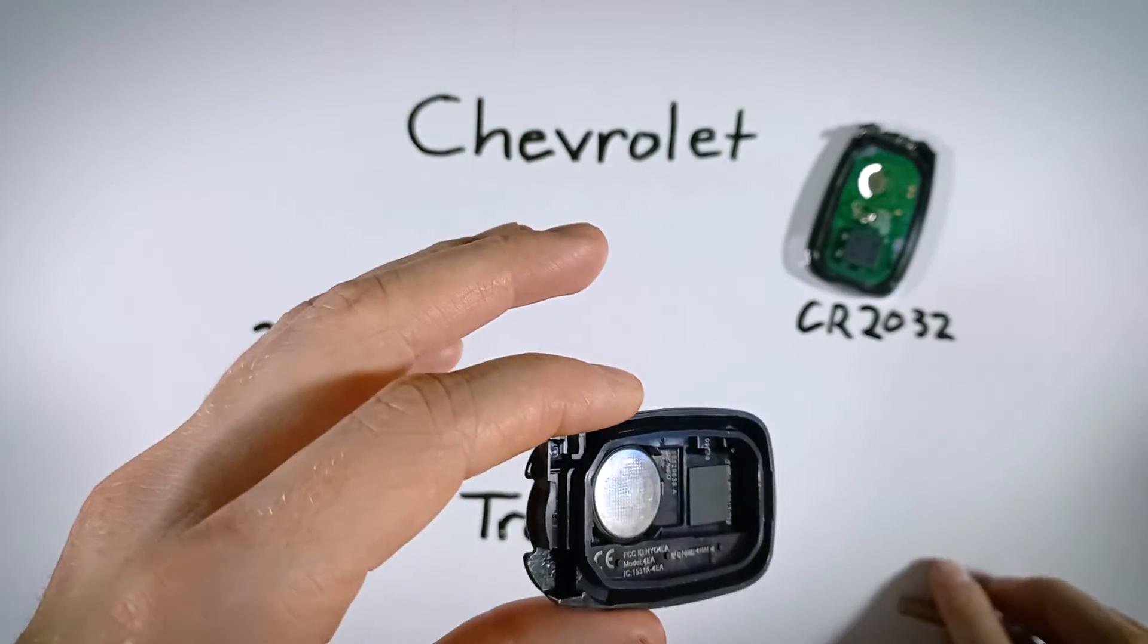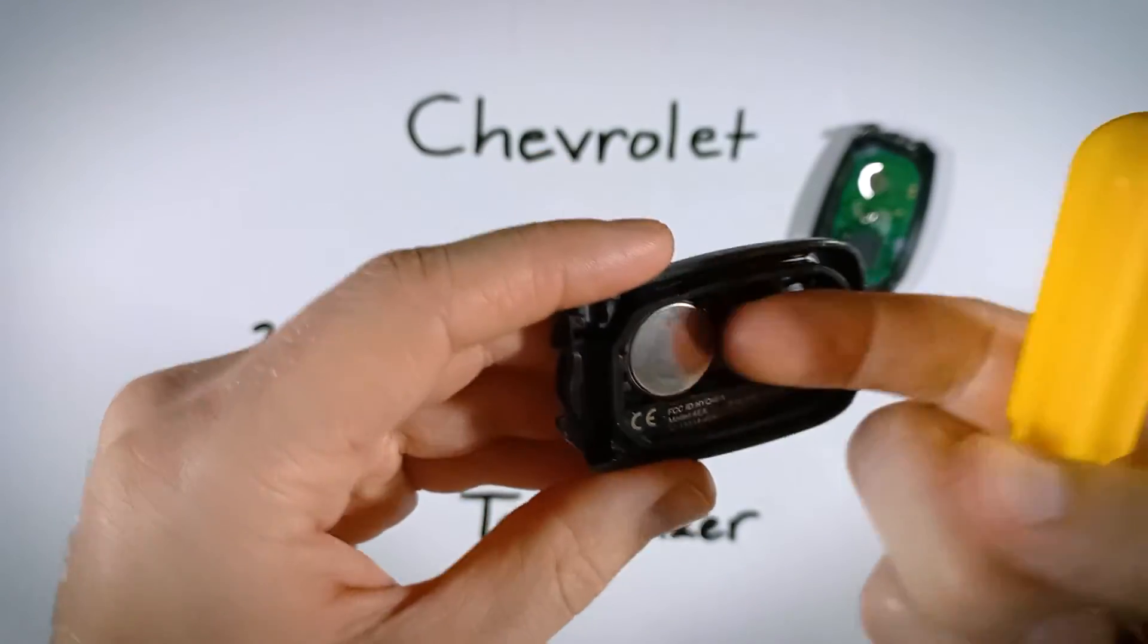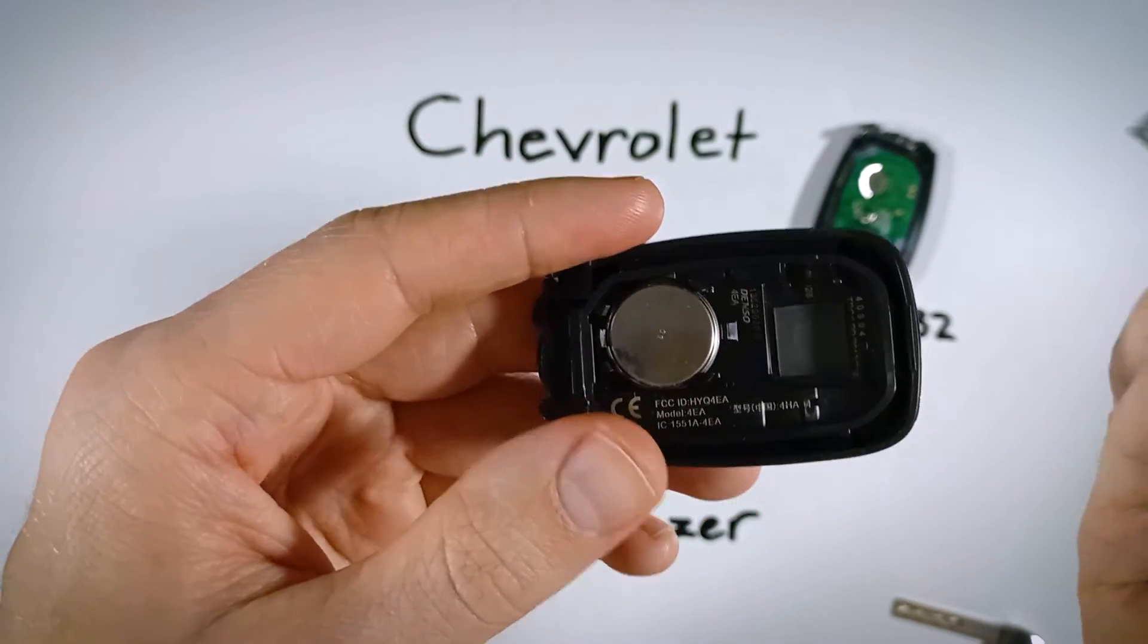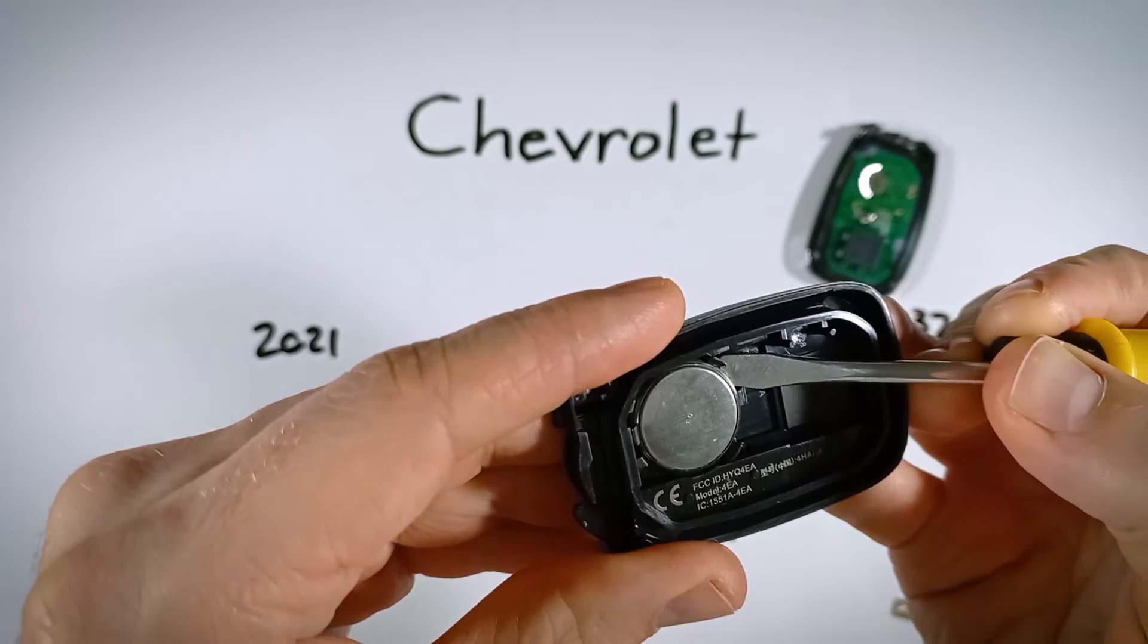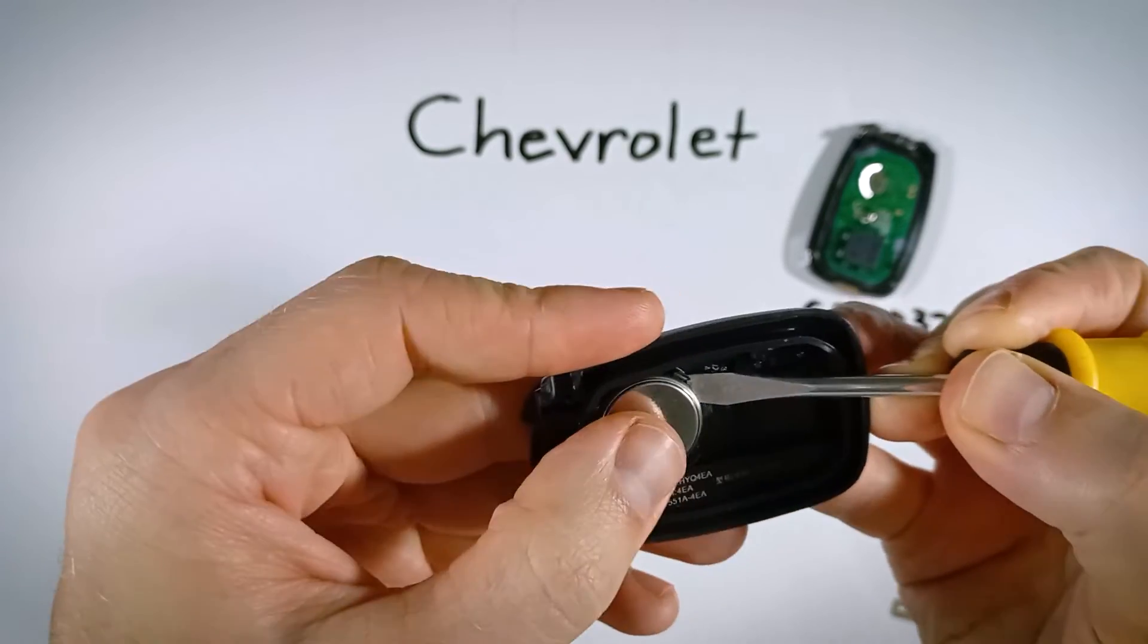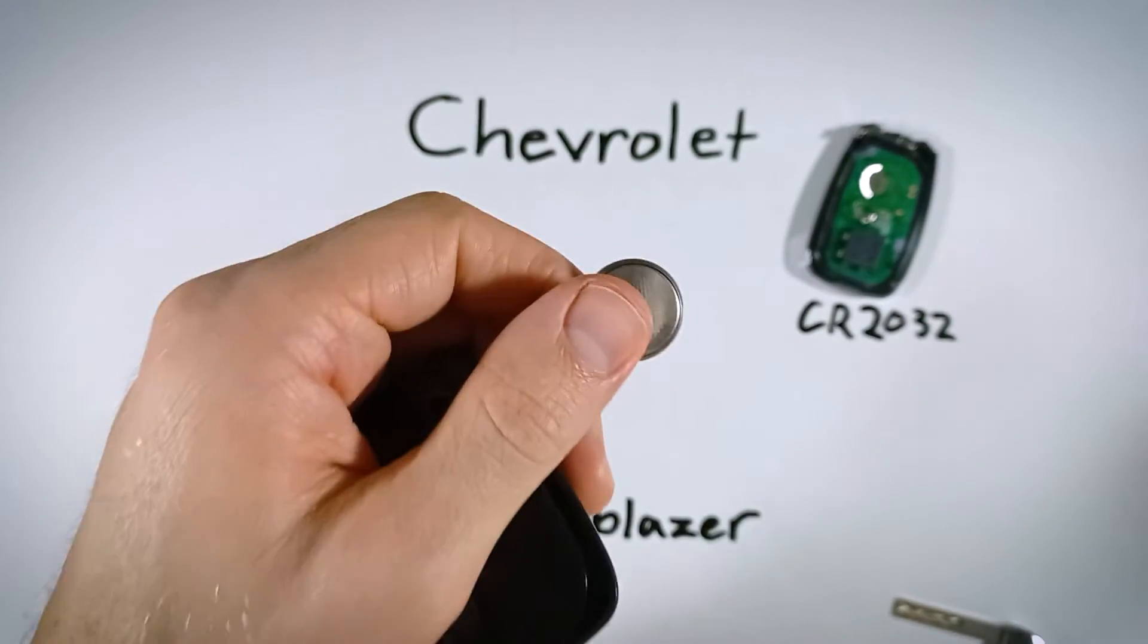And once it's open, it is much simpler. You're just going to grab your flathead screwdriver. You could actually just use your fingernail here, but I'm going to do it this way. You're just going to put the corner of your flathead under the battery and just gently lift it up. Just like that, it comes out. You can now dispose of your old battery.